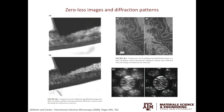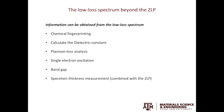Moving on to the plasmon peak, there is a wealth of information you can obtain from it. For example, you can get chemical fingerprinting, you can calculate the dielectric constant, you can look at plasmon loss analysis, you can also study the single electron excitation, you can estimate the band gap, and you can also measure the specimen thickness. Now let's look at them one by one.